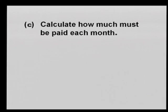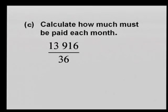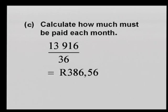The second question: calculate how much must be paid each month. The total amount of R13,916 — that is R9,800 plus R4,116 — is divided by the number of months in three years, which is 36. This gives a monthly payment of R386.56.